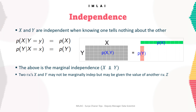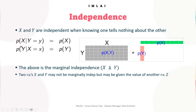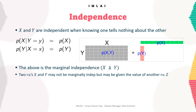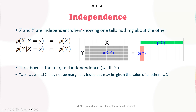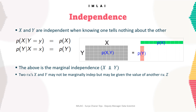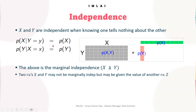In the context of marginalized probability distributions, independence means that the marginal probability distribution of one variable does not depend on the value of the other variable. In other words, if X and Y are independent, then the marginal probability distribution of X is the same regardless of the value of Y.